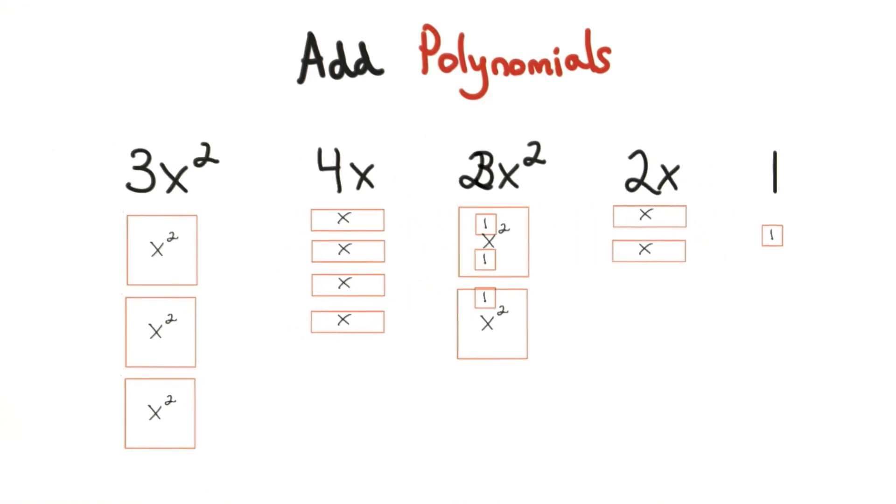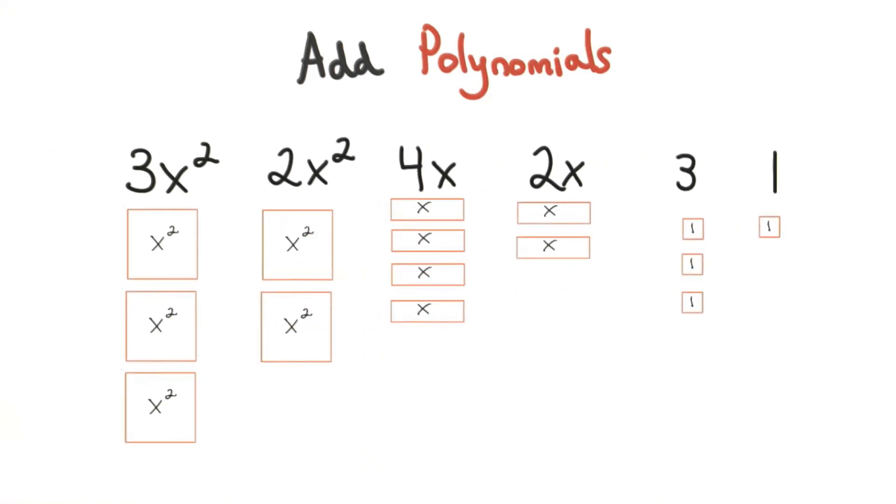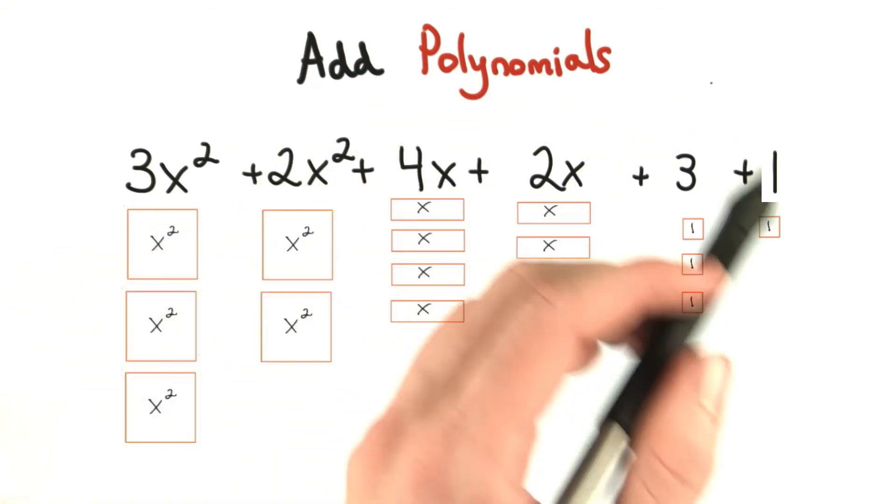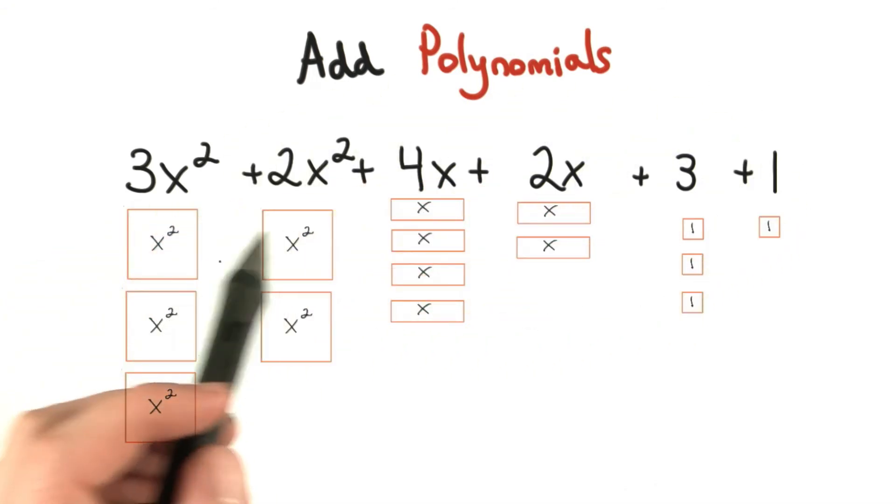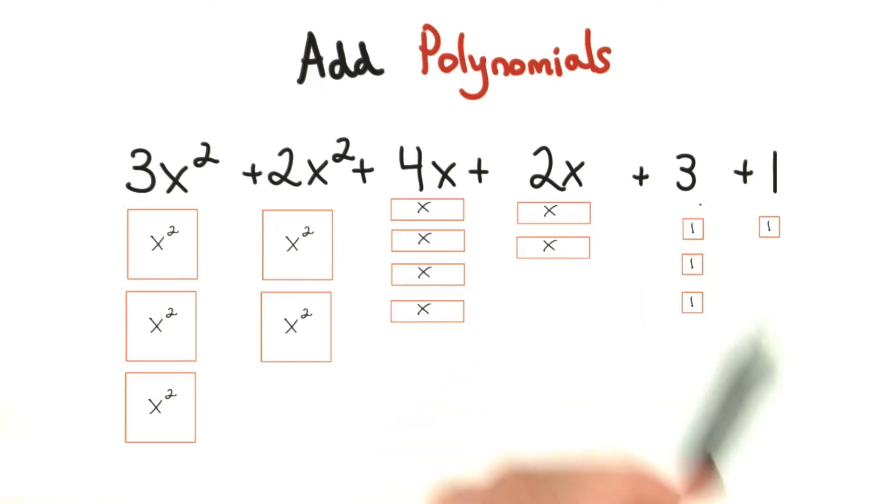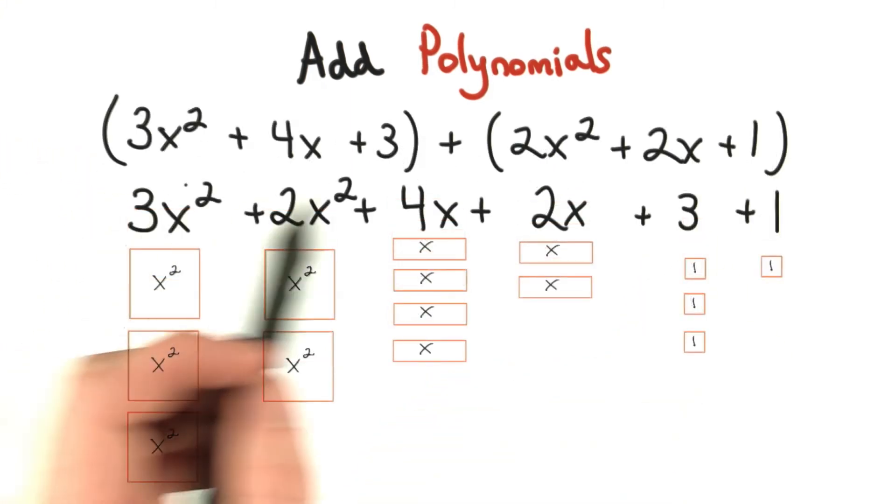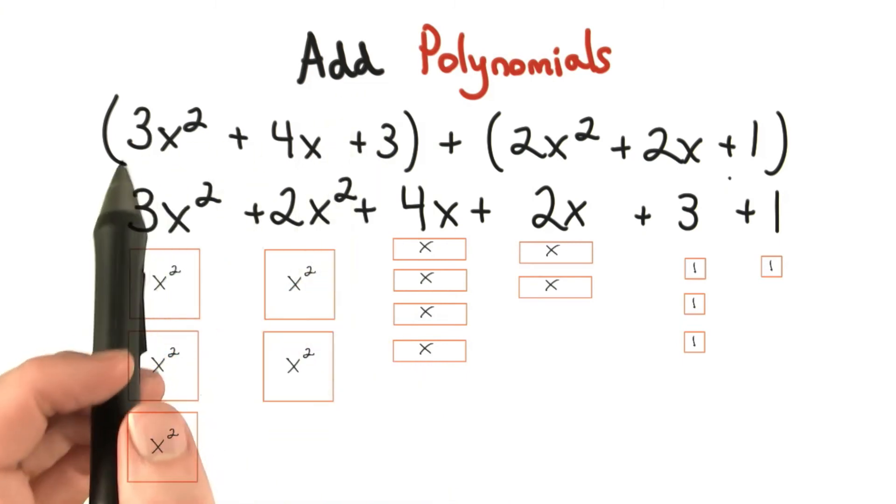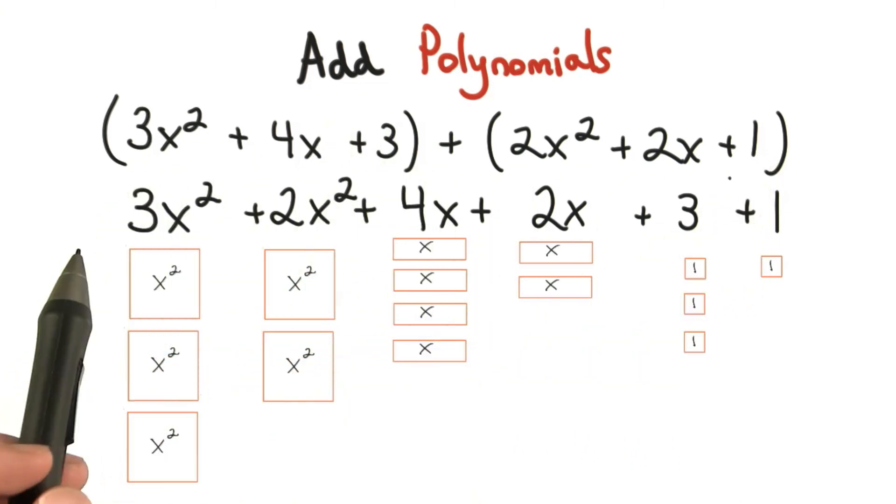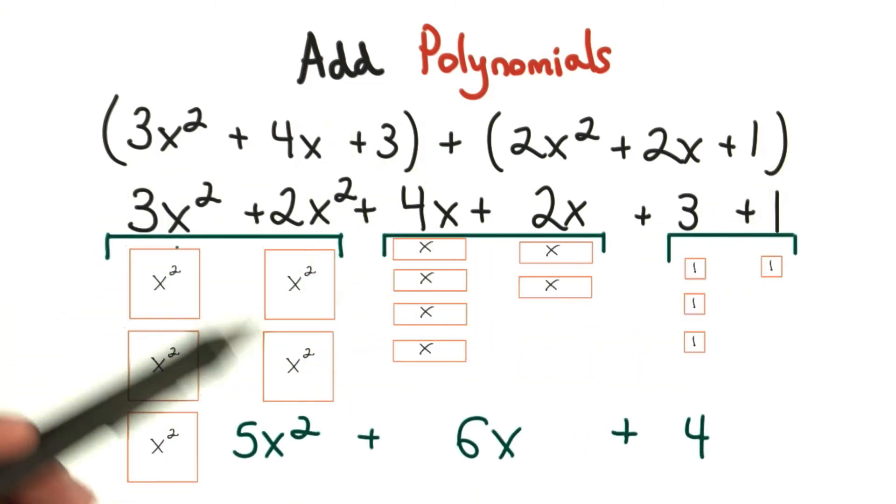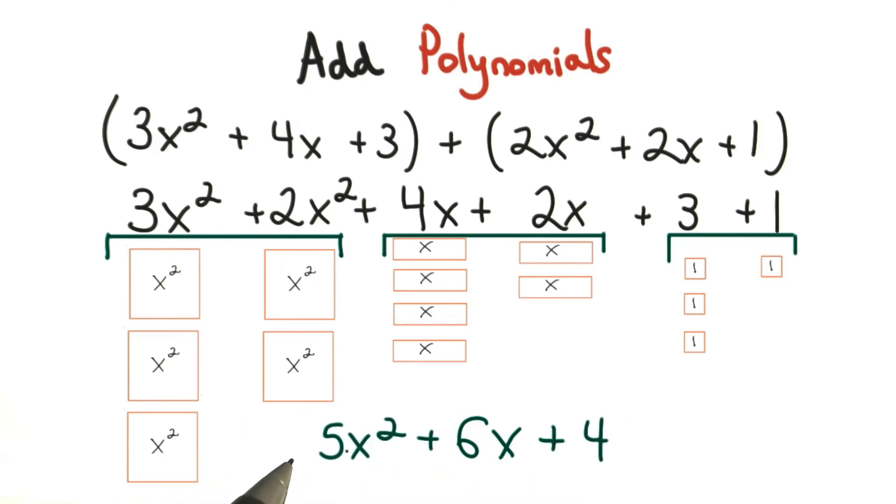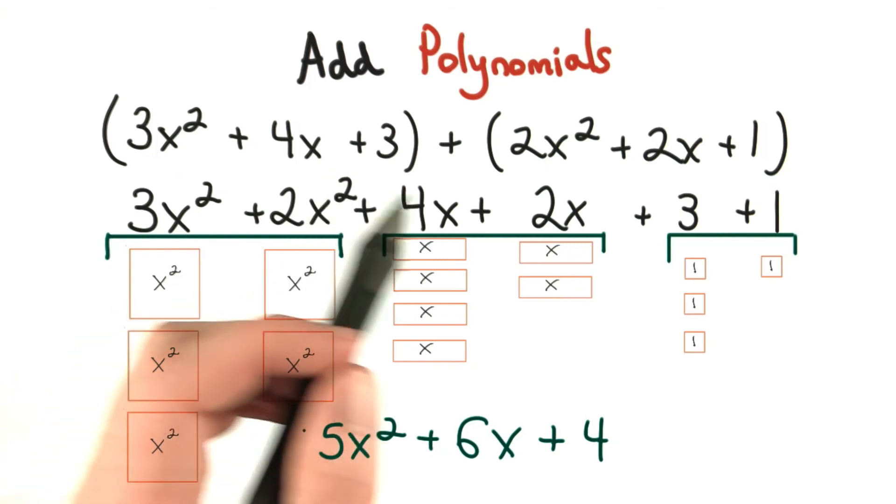I can rearrange my terms in the first polynomial and the second polynomial to get my like terms. Now that we have this, we're ready to combine like terms. Here was the original problem, and if we're just adding, we can drop the parentheses and rearrange to find our like terms. So we have 5 x squared plus 6 x plus 4. This is the trinomial we get when we add these two together.